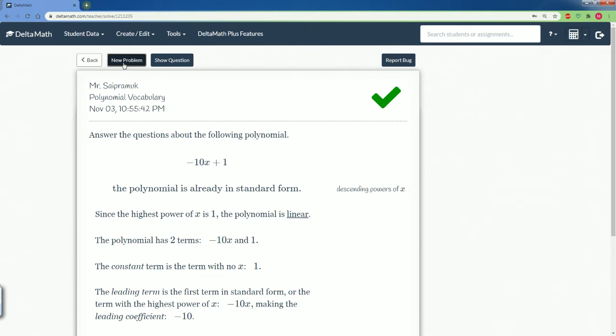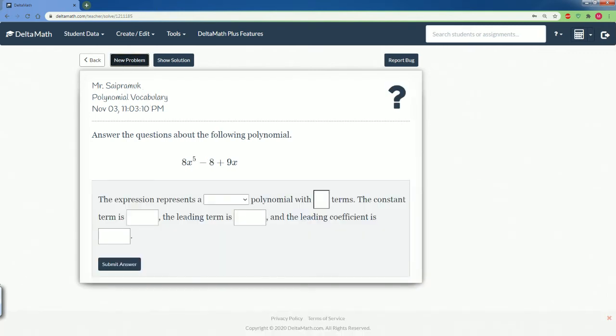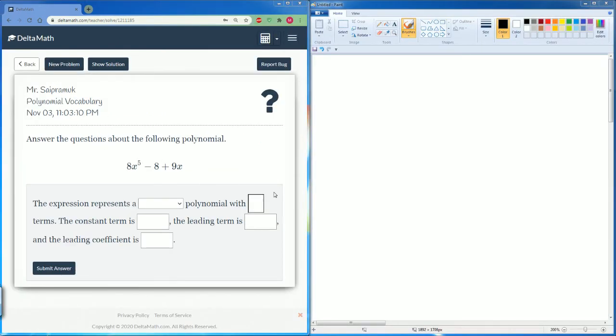Let's take a look at the new problem. Here we have this polynomial. Make sure you write this in standard form. So 8x to the fifth power, then you have plus 9x, then minus 8. It has to be in decreasing power.